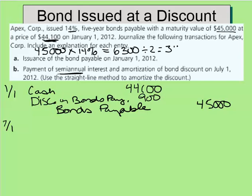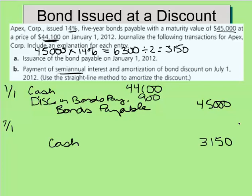So we know we're going to make an interest payment to our bondholders of $3,150, and we'll credit cash for $3,150. However, since we have this bond discount of $900, we need to amortize that — or write it off — over the life of the bond.